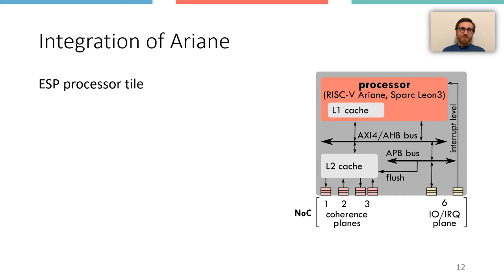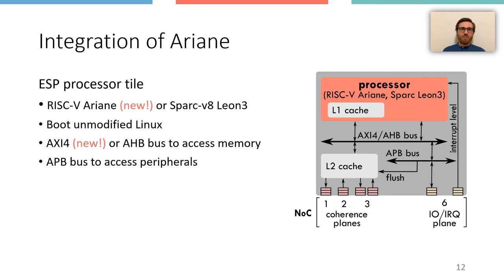We integrated the 64-bit RISC-V Ariane processor core from ETH Zurich in the ESP processor tile. Now, at the same time, ESP users can choose between a 32-bit SPARC V8 Leon 3 processor core from Cobham-Gaisler and Ariane. If Ariane is selected, the resulting system can execute any RISC-V program as is, with no ESP-specific patches. This includes Linux, the bootloader of Ariane, and third-party device drivers such as the NVDLA runtime.